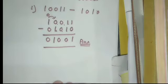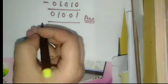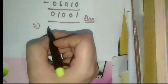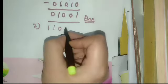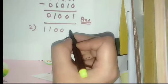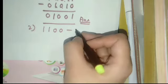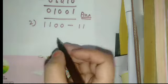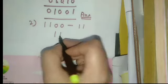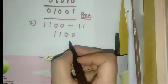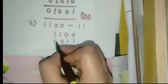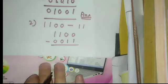Now let's take another example. We have 1100 and we have to subtract 11 from this number. We write 1100, and below it 0011 — since there is no leading number, we add 0. Then subtract.